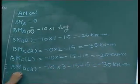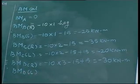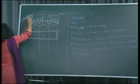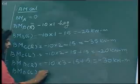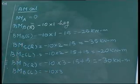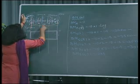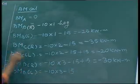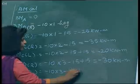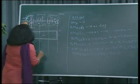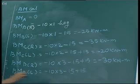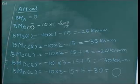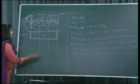Bending moment at point D just left — just left means I have to consider this couple moment also. So minus 10 into 3 (the 10 kN force over distance 3), second is couple moment 15 hogging so minus, third is couple moment sagging so plus, and fourth is this couple that is again sagging so plus. That is equal to 0.